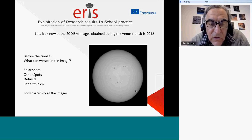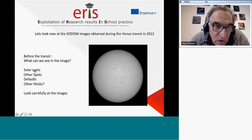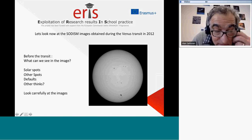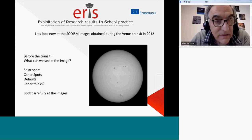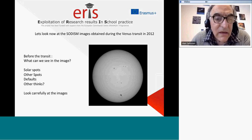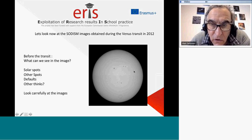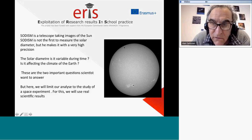Let's first come back to one example that students will see. They will see one image taken by the satellite itself. When we speak about the Sun, we speak about solar spots — these are the solar spots shown in black — but we also see some other defects. The idea in this practical exercise is to explain to students that when making experiments, you sometimes have defects or artifacts in the images, and all the work must be done carefully. Sometimes it takes six months or even one year to reduce a raw image to a clean final image for the scientific community.